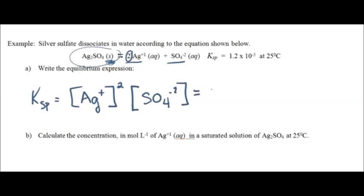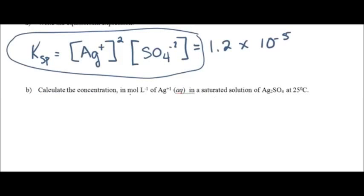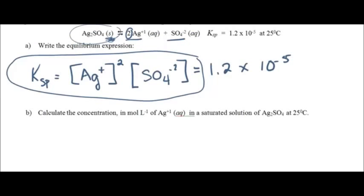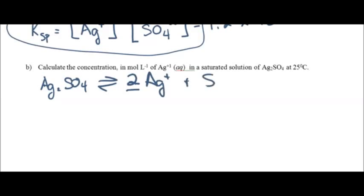Some might say we're not complete until we put the actual value in — that's fine, but make sure you're showing the expression. Part B: calculate the concentration in molarity of silver ions in a saturated solution of silver sulfate. We're looking for the maximum amount that will dissociate. We have our balanced equation with silver sulfate dissociating into two silver ions and one sulfate ion.